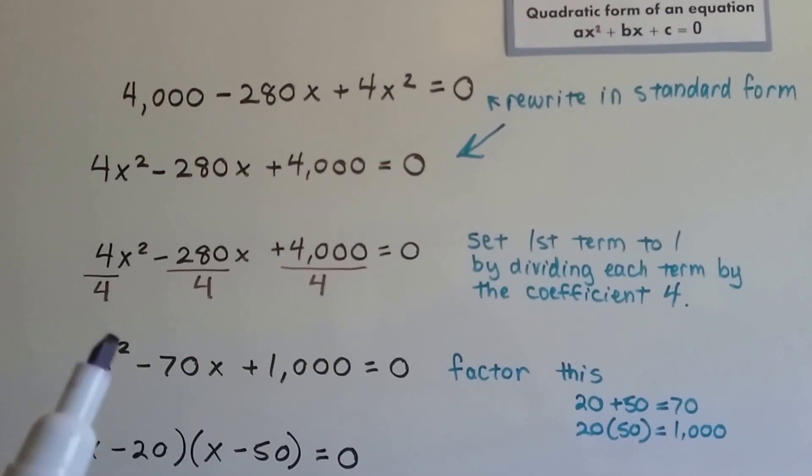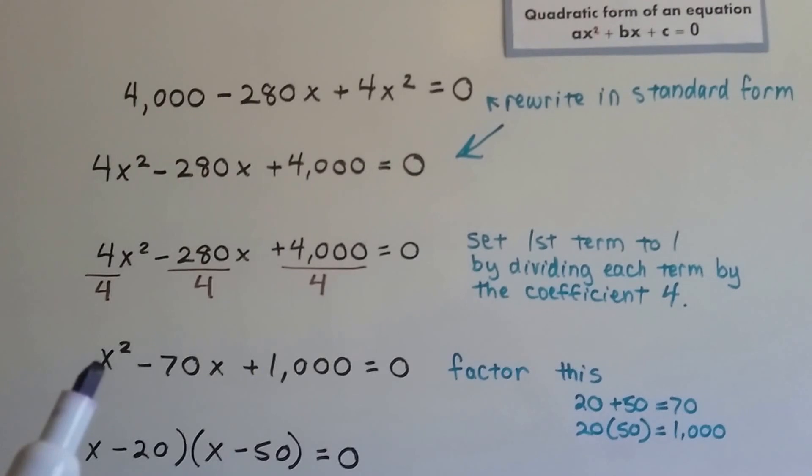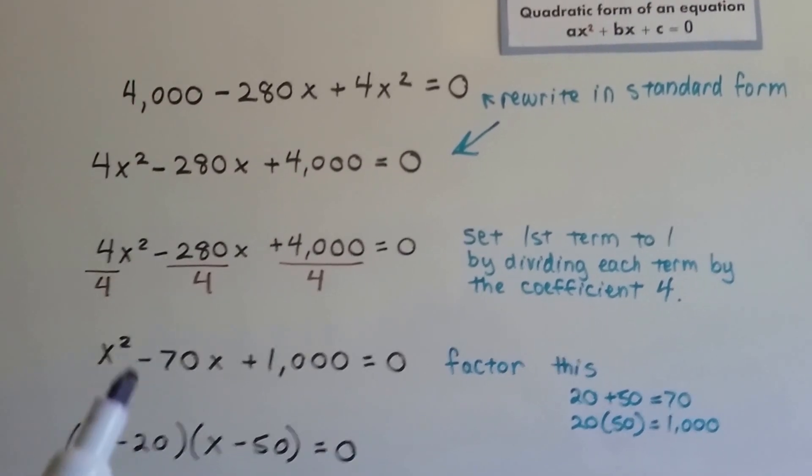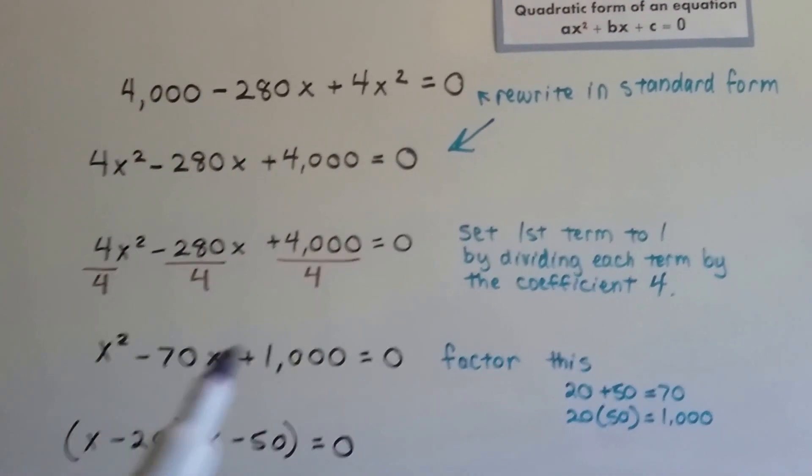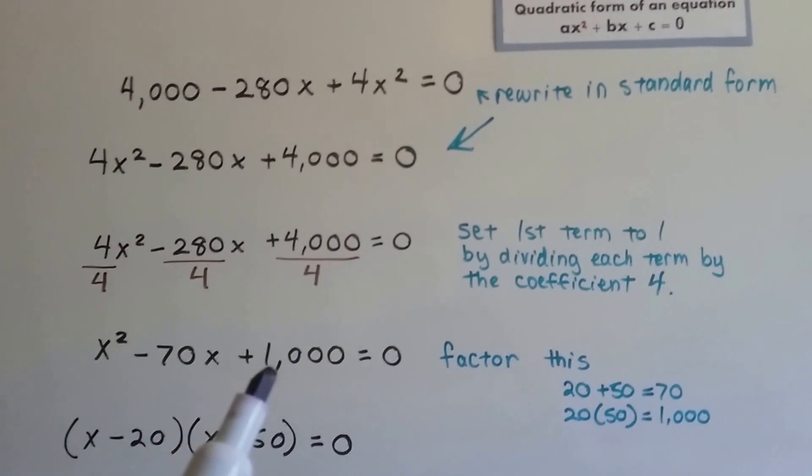This is going to become a 1 because the numerator and denominator are the same, so we have just x squared. This is going to become negative 70x, and this is going to become plus 1000.